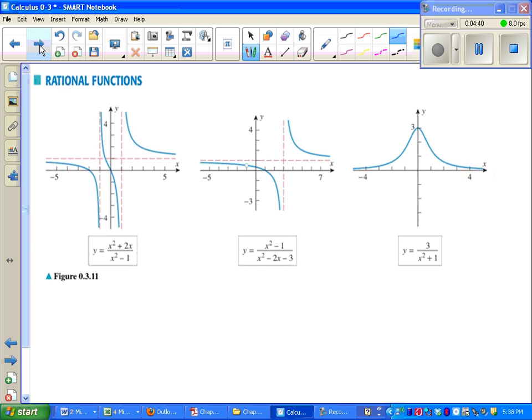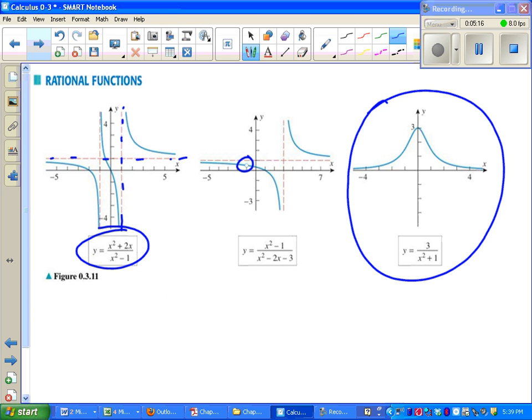You might also remember graphing rational functions in pre-calculus. Rational functions were functions that had a polynomial on top and bottom. Most importantly, that polynomial on the bottom should not be a constant. It has to be something with a variable for it to really fit into what we consider a rational function. Rational functions have asymptotes, they have holes. So here you see a hole, here you see some asymptotes. Sometimes a rational function doesn't have any of those things. It's kind of rare, but it happens.